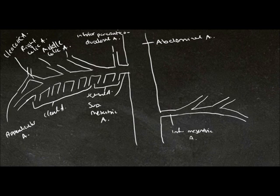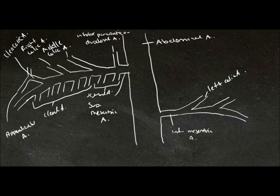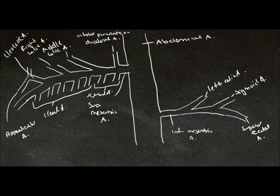Moving on to our inferior mesenteric artery now, and this is what supplies the rest of the large intestine, including the upper part of the rectum. The first branch we have is the left colic artery, then we have the sigmoid artery, and finally the superior rectal artery. And these are supplying the descending colon, the sigmoid colon, and the superior part of the rectum.